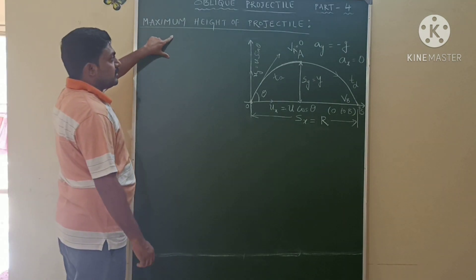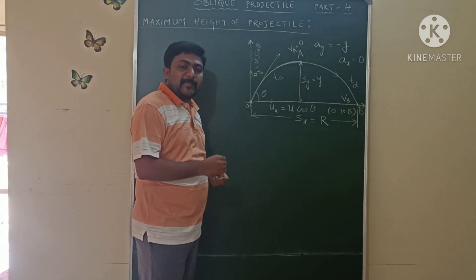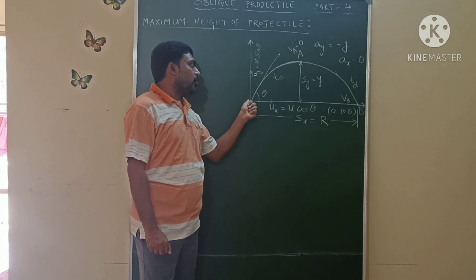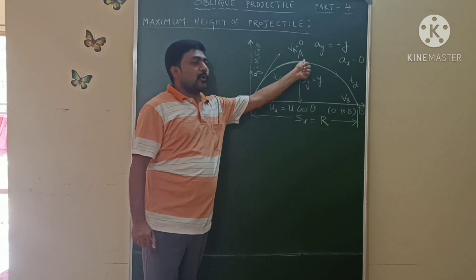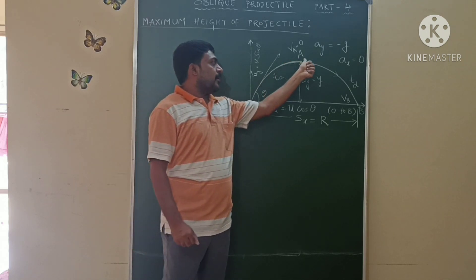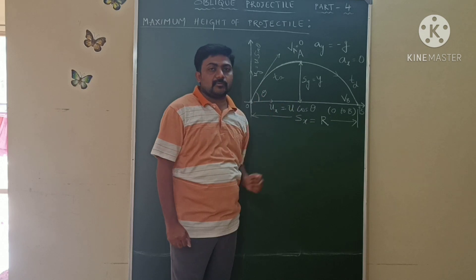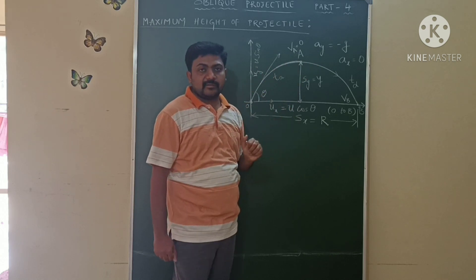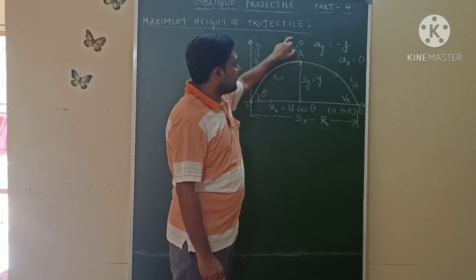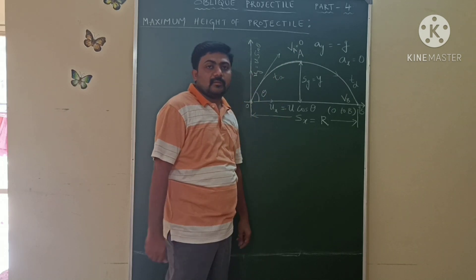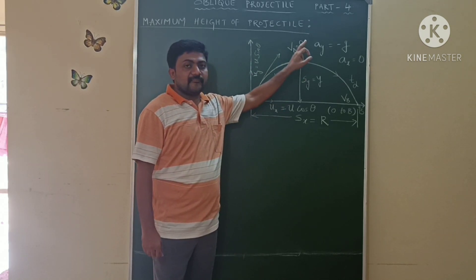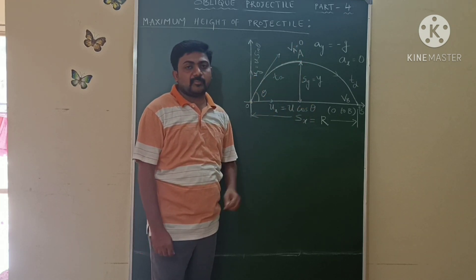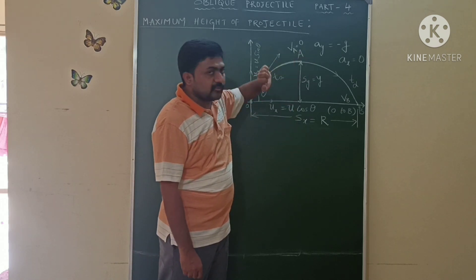First I will derive the equation for maximum height. The projectile starts at a point, and after some time reaches point A. At point A is the maximum height — the height attained by the projectile. At maximum height, the velocity of the projectile is zero.